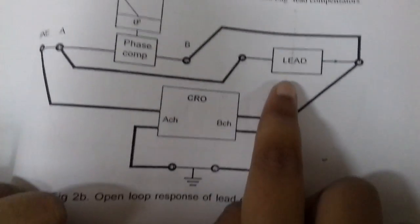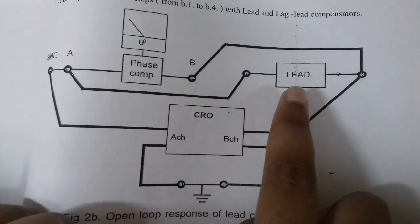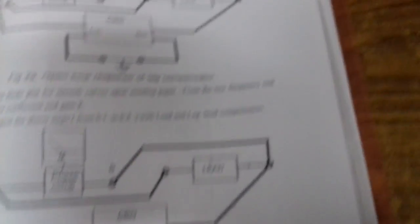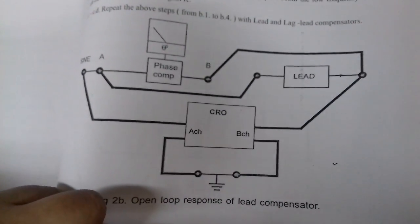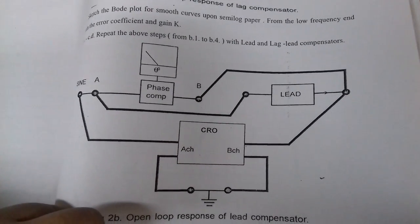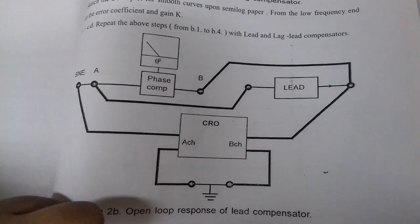Similarly, I can do it for a lead compensator. The process part will be replaced with a lead compensator. The same type of readings have to be taken in which gain will be calculated as output divided by input, and the phase will be compared - output phase and input phase.